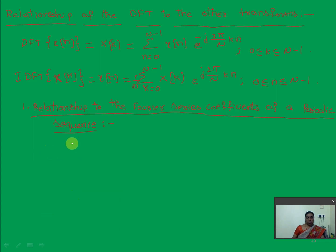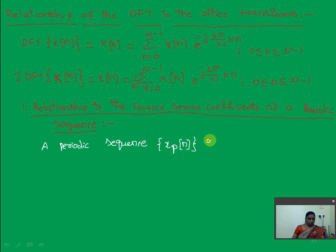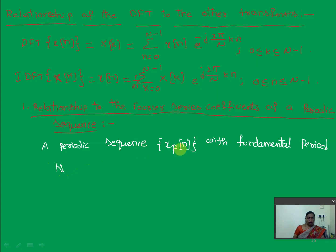First we will observe the Fourier series representation of a periodic discrete-time signal. Consider a periodic sequence xp(n) with fundamental period N. How can we represent this periodic sequence with fundamental period N in terms of its Fourier series representation?